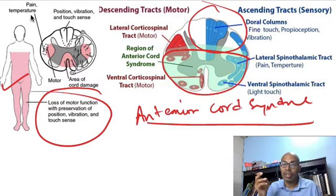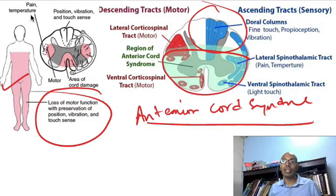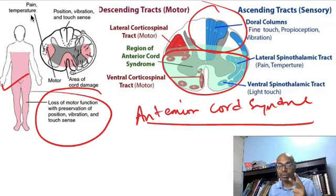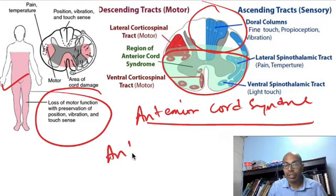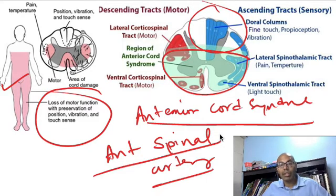Because the posterior portion — the dorsal columns — is preserved in anterior cord syndrome, proprioception and vibration are not affected. Pain, temperature, and motor function are affected, but dorsal columns are intact. Greater lower limb involvement compared to upper limb indicates anterior cord syndrome. The two causes are direct trauma to the anterior cord and injury to the anterior spinal artery. Prognosis is slightly poorer than central cord syndrome, but patients do reasonably well.